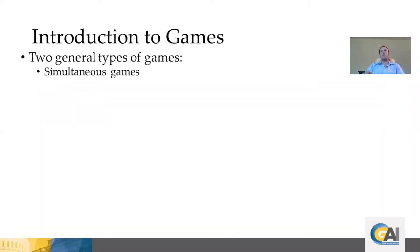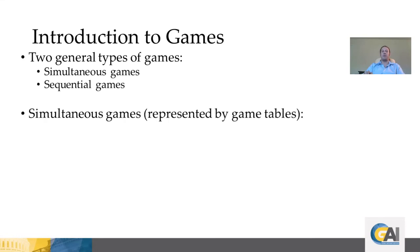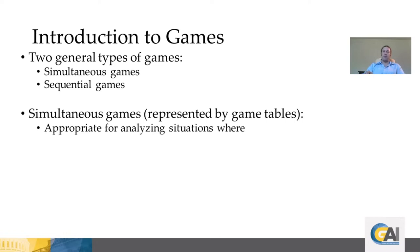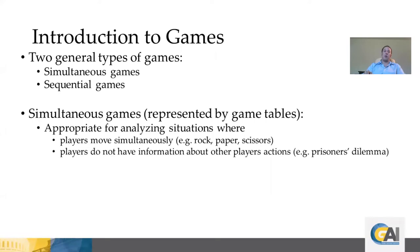Next, we're going to talk about the two general types of games that are often studied: simultaneous move games and sequential move games. Simultaneous move games are represented by game tables. They're appropriate for analyzing situations where players either move simultaneously — such as in rock, paper, scissors — or when they do not move simultaneously but players do not observe each other's actions while making decisions. We're going to see an example of that, namely the prisoner's dilemma, in just a minute.